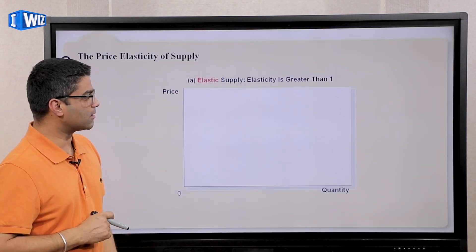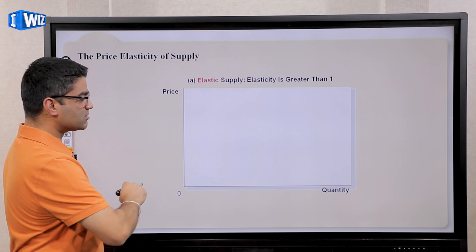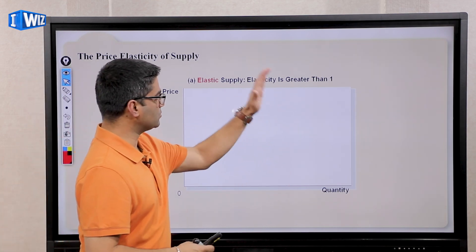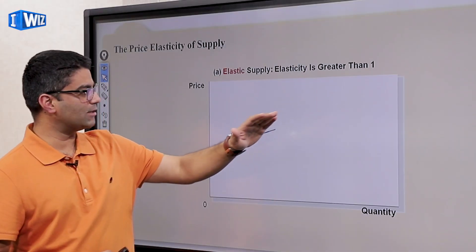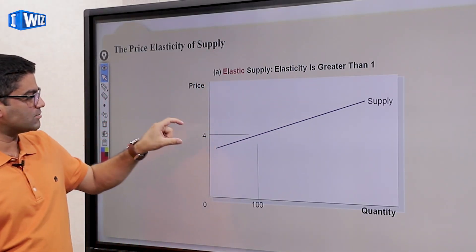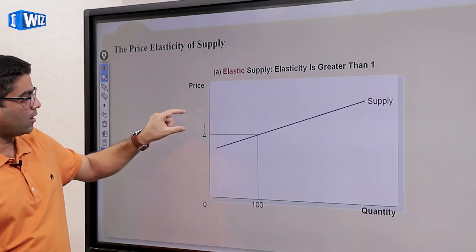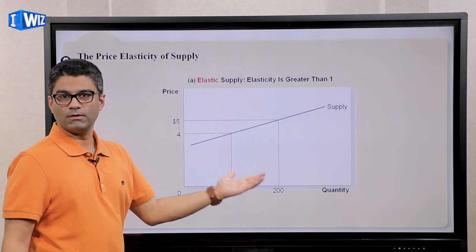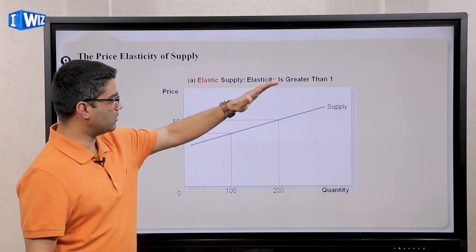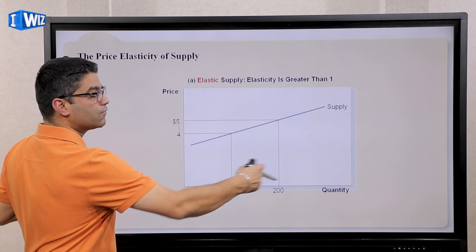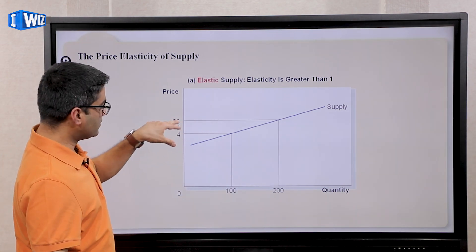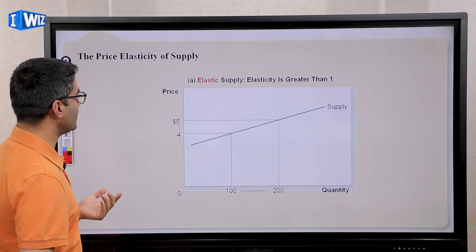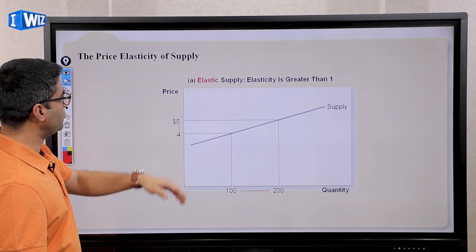An elastic supply curve is where if the price changes a small amount, quantity changes by a lot. In terms of steepness or flatness, the line is going to be very flat — if the price goes up a small amount, the quantity that producers want to sell goes up a lot. Elastic means there's a lot of room for producers to adjust, so when price changes a little bit, quantity adjusts by a lot.